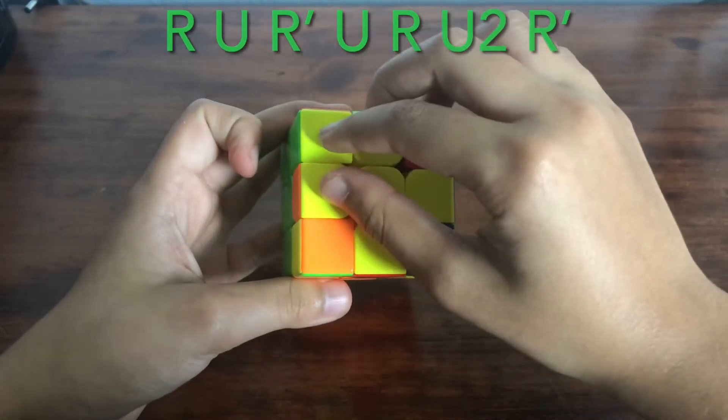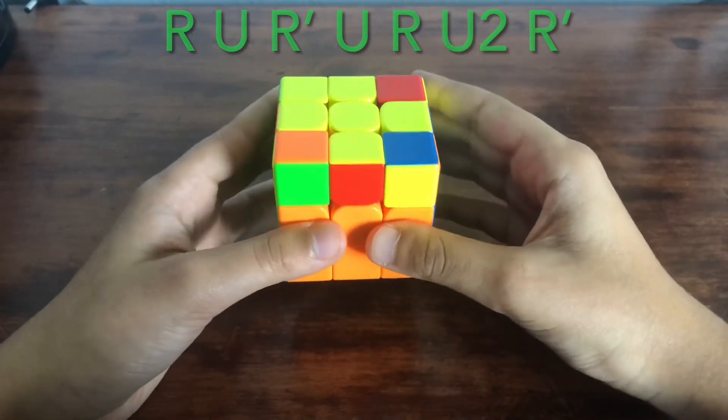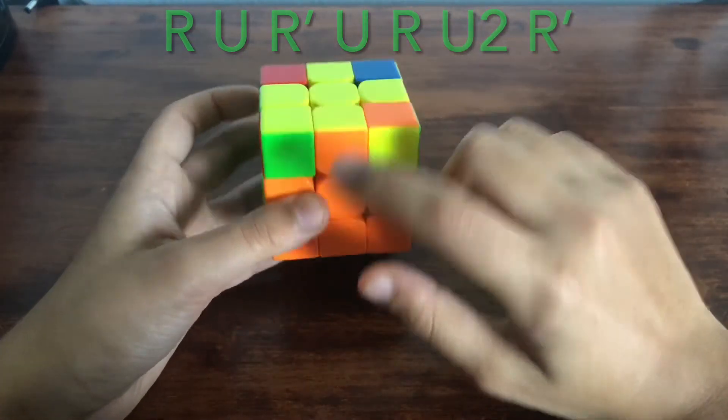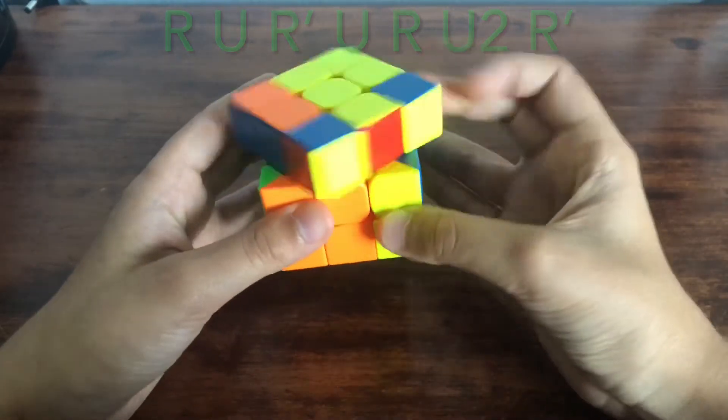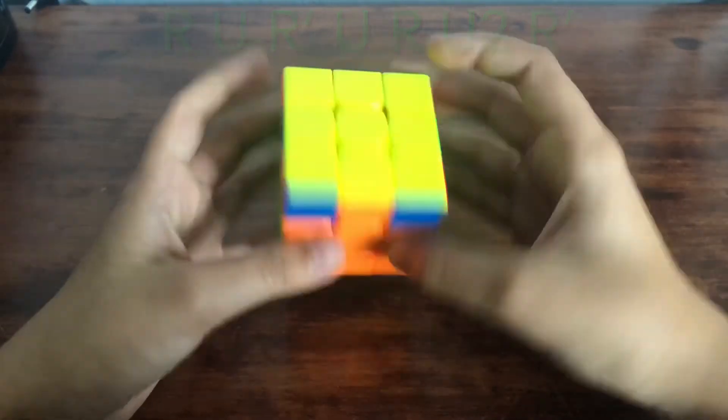And now as you can see you have this block here and nothing else. So you're gonna hold it like this where you see this yellow piece facing you, and you're gonna do it one last time. And there you go.